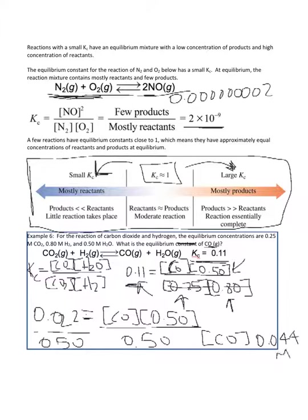The concentration of carbon monoxide at equilibrium is 0.044 molar. If we think about this, it makes sense: our Kc is small — less than 1 — and carbon monoxide is a product. Since we have a small Kc, we have mostly reactants, meaning you should have a low concentration of your products.